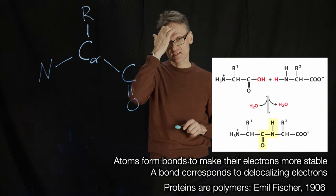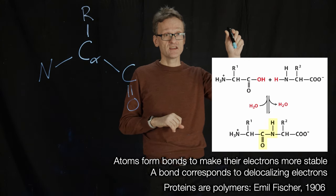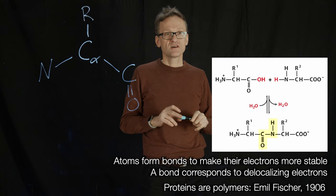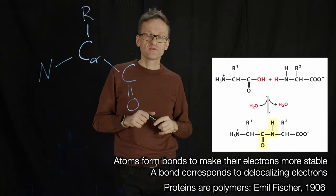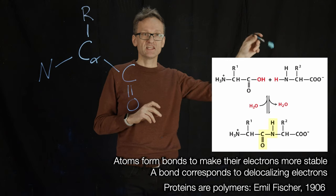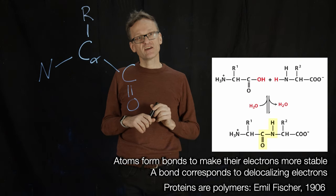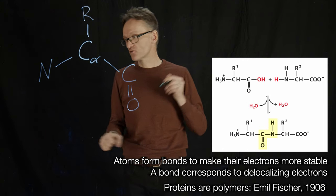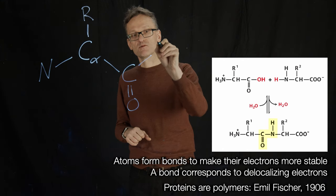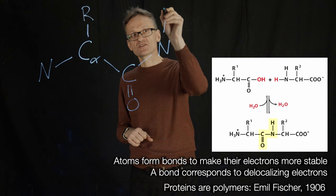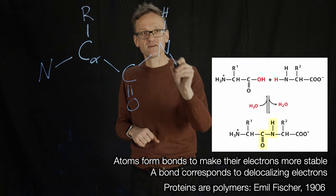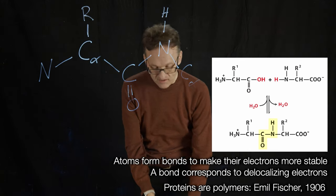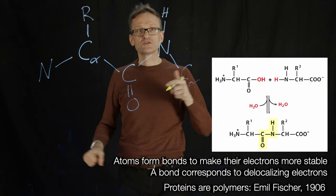If we take two amino acids, they can actually merge under some conditions. We remove the OH from the first amino acid and the H from the second amino acid, and then they form a bond. Drawing the next amino acid, we would then have a nitrogen — and I'll draw the hydrogen here — and then the next C-alpha. This is a very special bond.